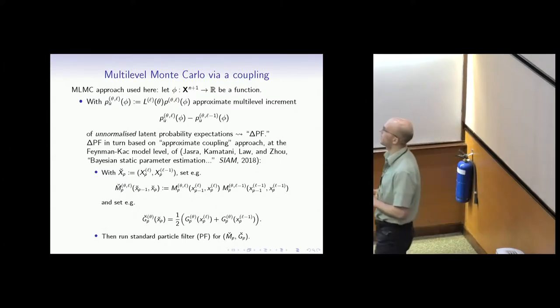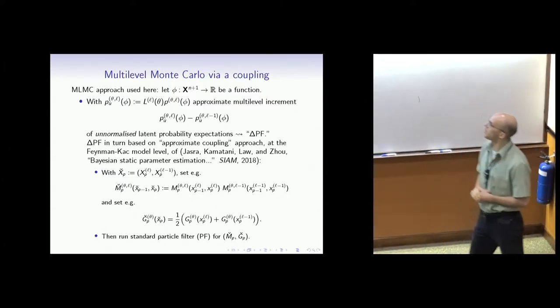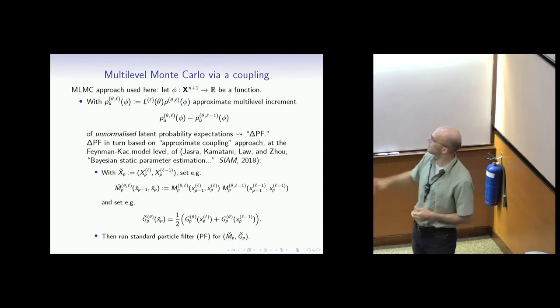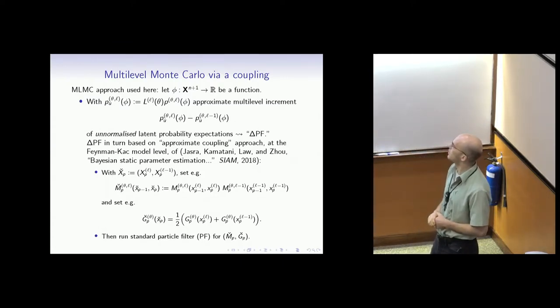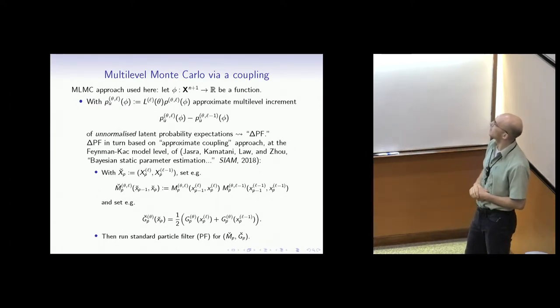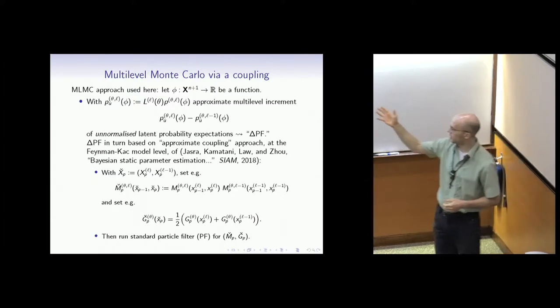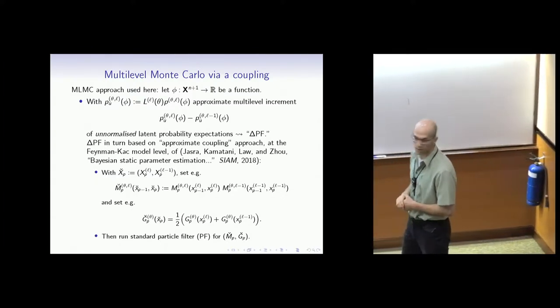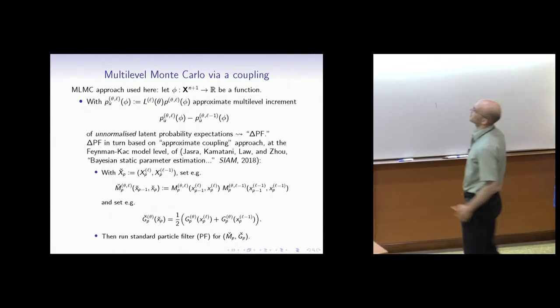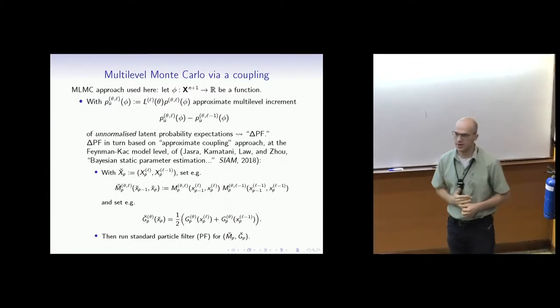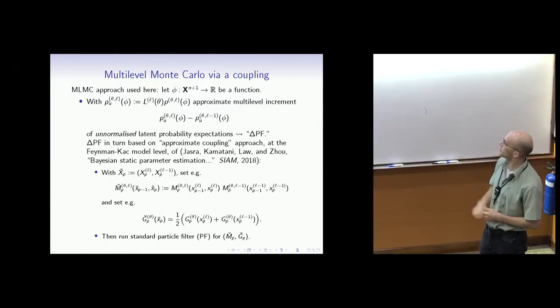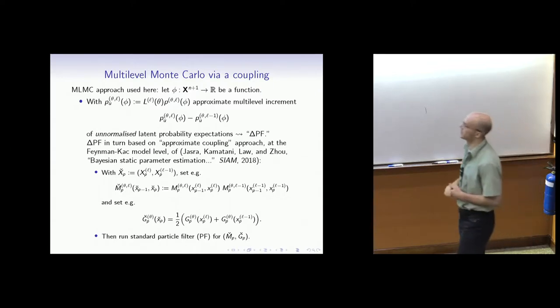It's based on using what's called the approximate coupling by the authors AJ, Kengo, Cody, and John. In their paper on Bayesian static parameter estimation, they use this coupling approach at the Feynman-Kac model level. We have M check, which is given as a coupling between the two levels L and L minus one, and also a joint potential. This coupling seems to be very effective and we use it to estimate unbiasedly this unnormalized increment.